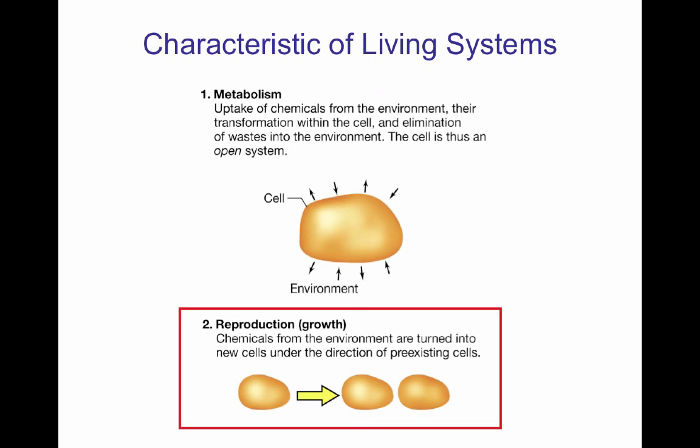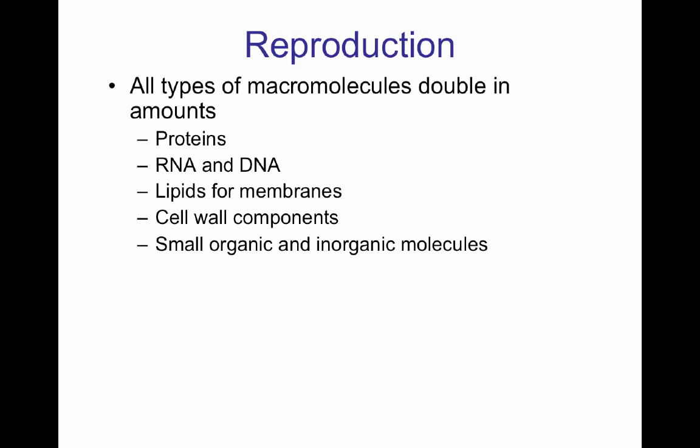One of the big characteristics that all cells have is the capacity to reproduce. As the cells grow, they're going to have to double the amount of macromolecules they have. They need to replicate proteins, replicate their genetic material — DNA and RNA — make more membrane, and in the case of cells with cell walls like bacteria and archaea, they need to replicate those cell wall components, plus produce all the organic and inorganic molecules that each daughter cell needs.